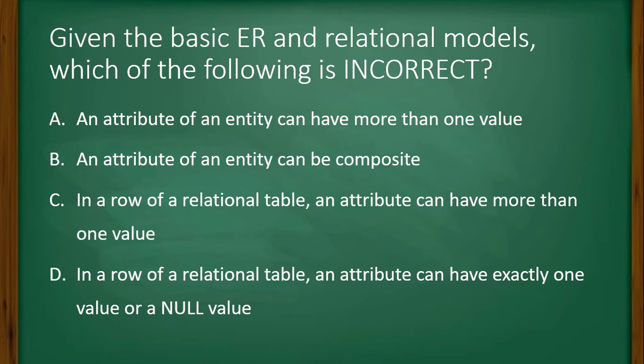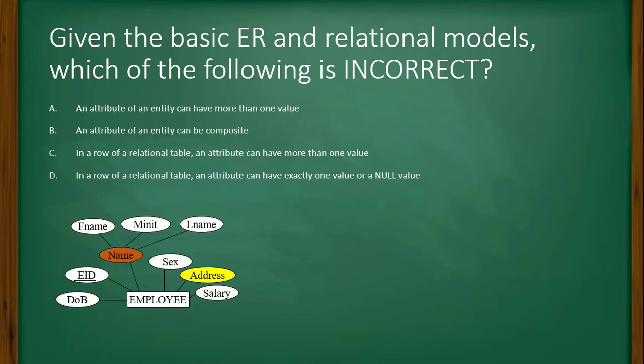In a row of relational table, an attribute can have exactly one value or a null value. Now if I look at an entity, say employee is an entity here.